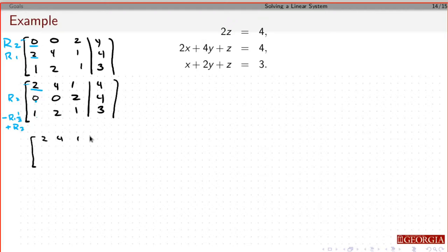So I leave the top row alone. I leave the second row alone. Let's see, so this will be 2 times minus 1/2 is minus 1, plus 1 is 0.